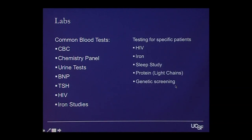There are certain labs that we do as well. We do a CBC or blood count — we want to see what the hemoglobin is, because if you have a high hemoglobin, that can lead to heart failure. A chemistry panel is going to look at your kidney function, because that might be affected by heart failure. We also do a BNP, which is a blood test that's elevated when you have a lot of congestion, so it helps clue in whether this patient is likely to have heart failure or not.